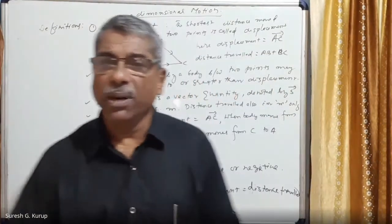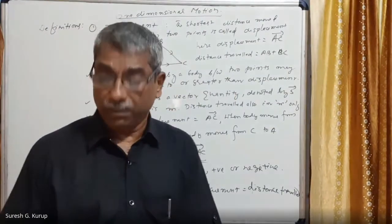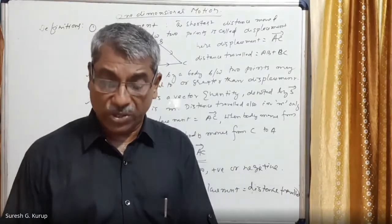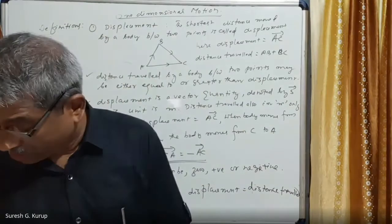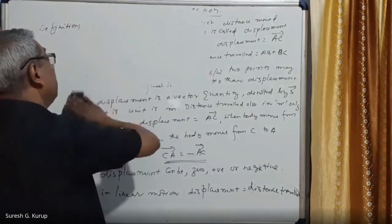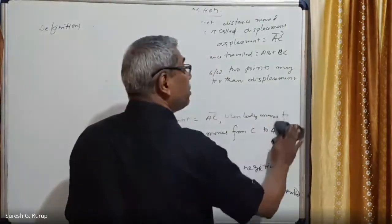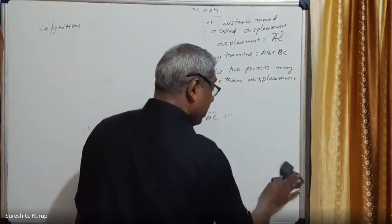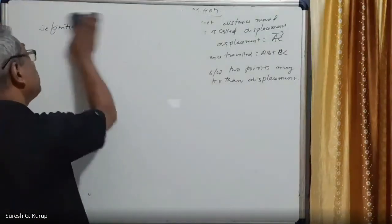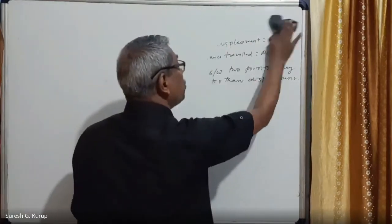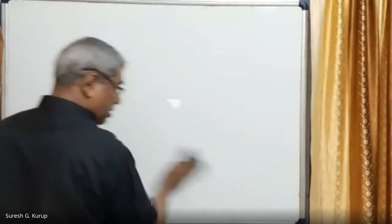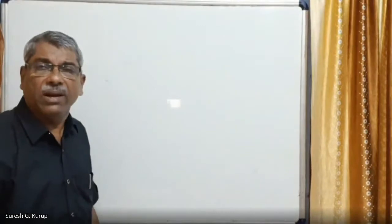Now I will explain speed. Speed is the time rate of change of distance traveled by a body. Speed is denoted by the small letter v. The time rate of change of distance traveled means the total distance traveled divided by total time.